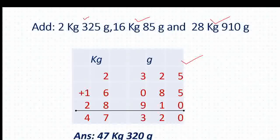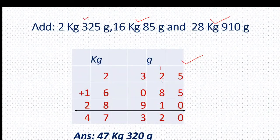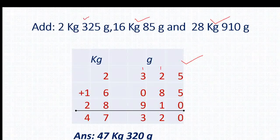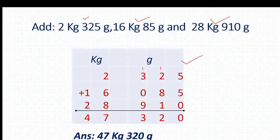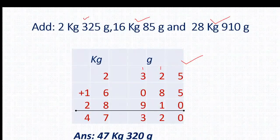5 plus 5 plus 0 equals 10 — 0 written here and 1 will be added to the next column. So 1 plus 2 is 3, 3 plus 8 is 11, 11 plus 1 is 12 — 2 written here and 1 will be added to the next column. So 1 plus 3 is 4, 4 plus 0 is 4, 4 plus 9 is 13 — 3 written here.